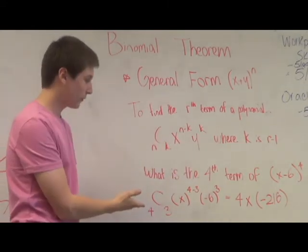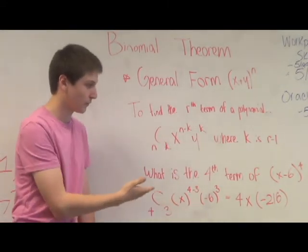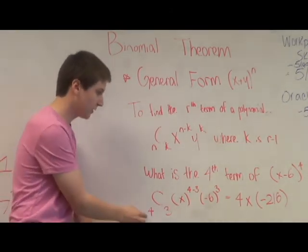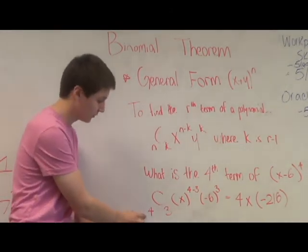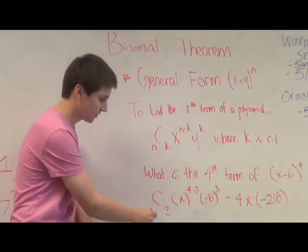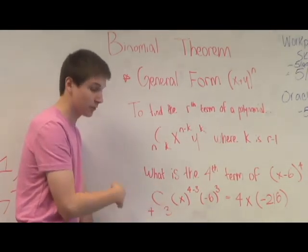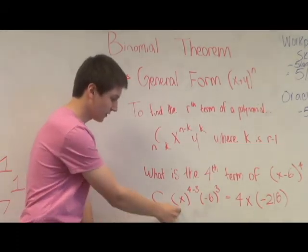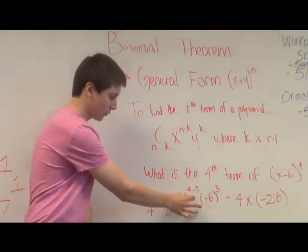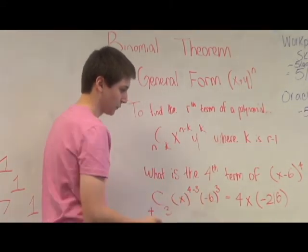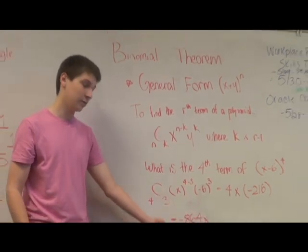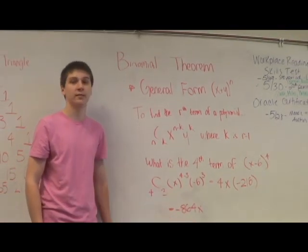So an example of finding this, what is the fourth term of the binomial x minus six to the fourth power? We see that n is the degree that our binomial is raised to, so we have four, chooses our degree minus one, or the fourth term minus one, is three, so four choose three times x to the n minus k, which is one, then negative six to the third, equals four x times negative 216, gets our fourth term to be negative 864 times x.